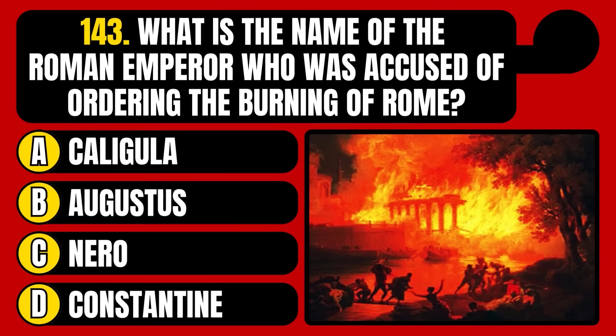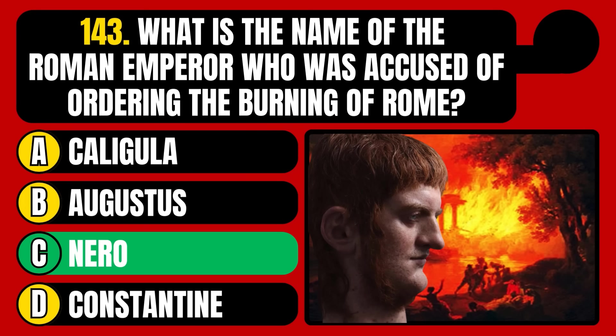What is the name of the Roman emperor who was accused of ordering the burning of Rome? Caligula, Augustus, Nero, or Constantine? The correct answer is option C, Nero.